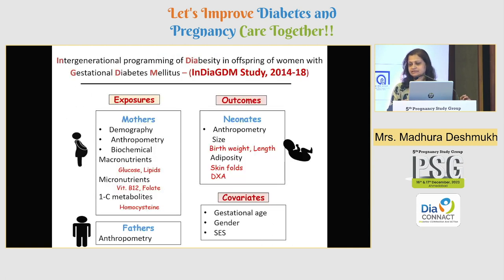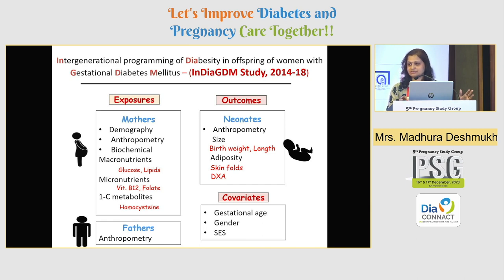India GDM study is a well-characterized hospital-based study where we have collected extensive information on mother's demography, anthropometry, and biochemical parameters which included macronutrients, glucose, lipids, micronutrients including B12 and folate, and the one-carbon metabolite homocysteine. To note, deficiency of methyl donors like vitamins B2, B6, B12, and folate causes disturbances in homocysteine metabolism, resulting in accumulation of homocysteine in the blood, which is an indicator of multi-micronutrient deficiency. Unlike other studies, we have also collected father's anthropometric measurements.